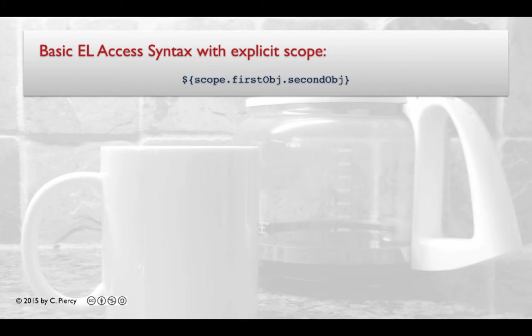It's possible that we can access Java bean properties with explicit scope. If we do so, then we still use the dot notation in between the braces and we simply indicate the scope at the beginning.